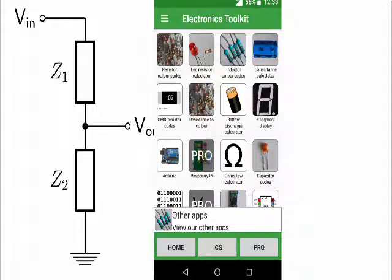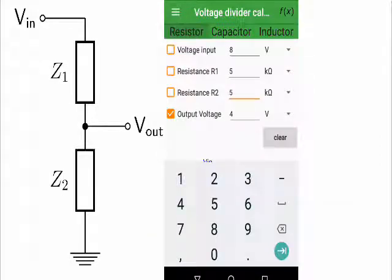You can download it. You can use the Vin value and you can use the Vout value.